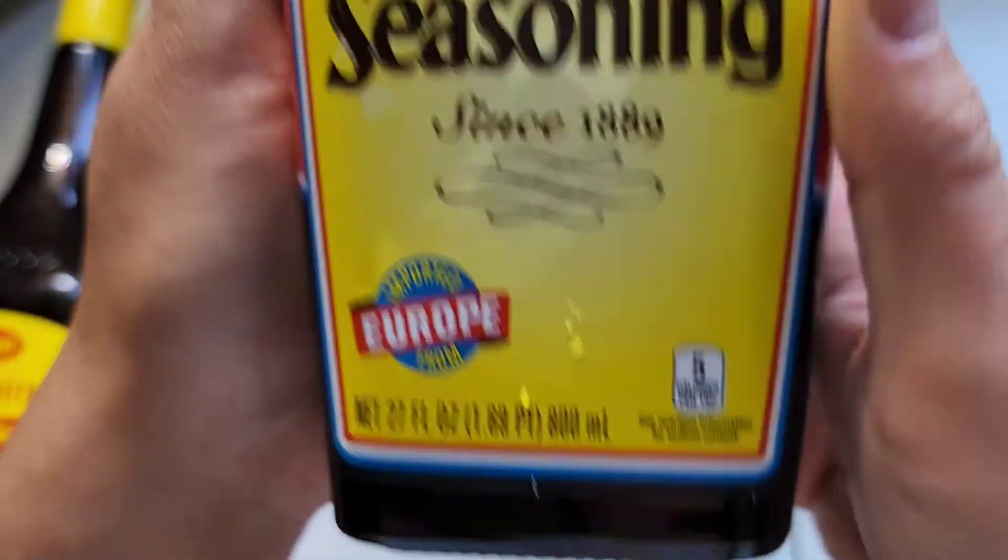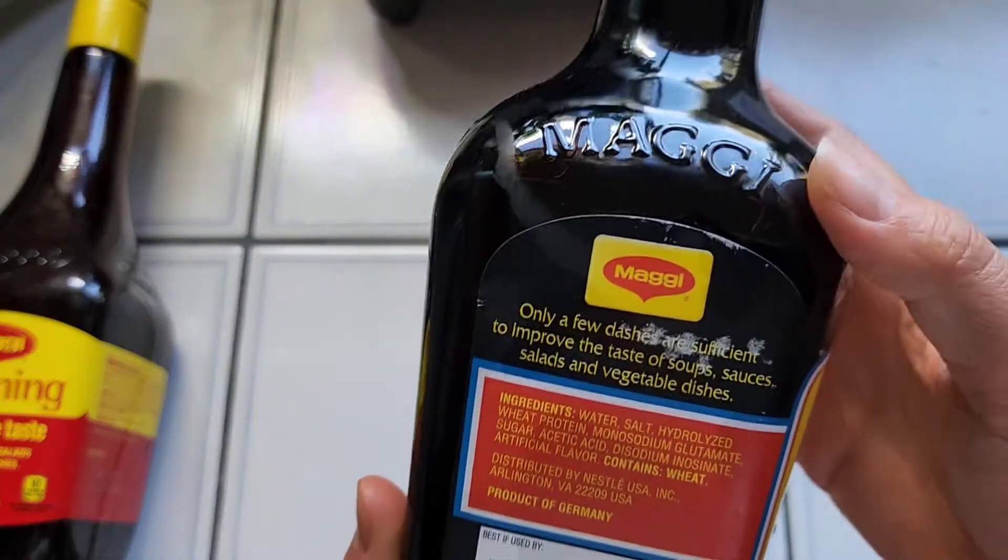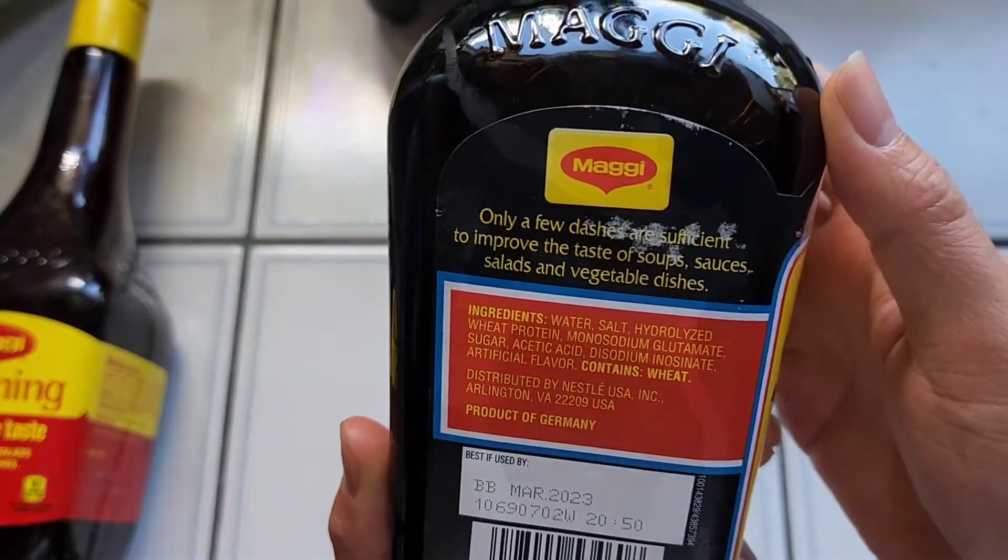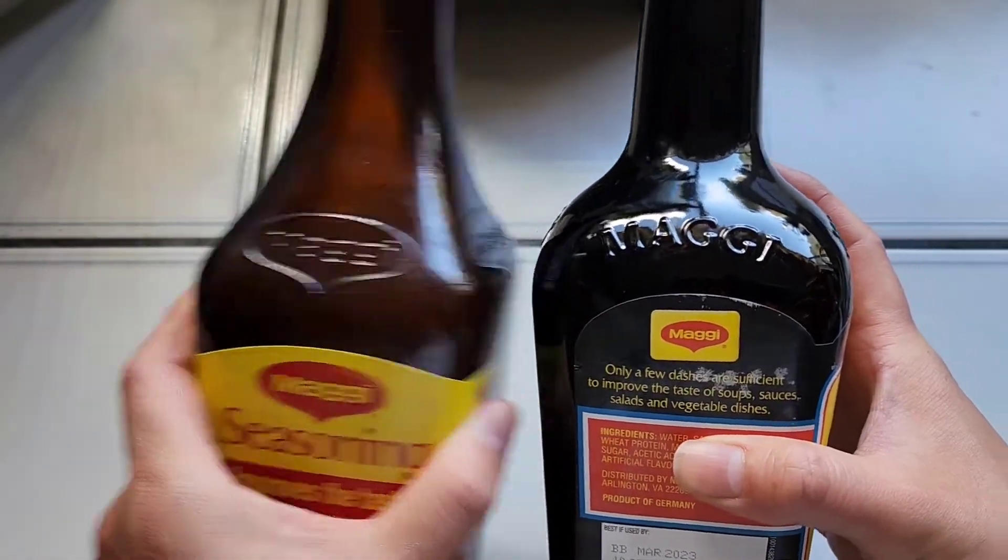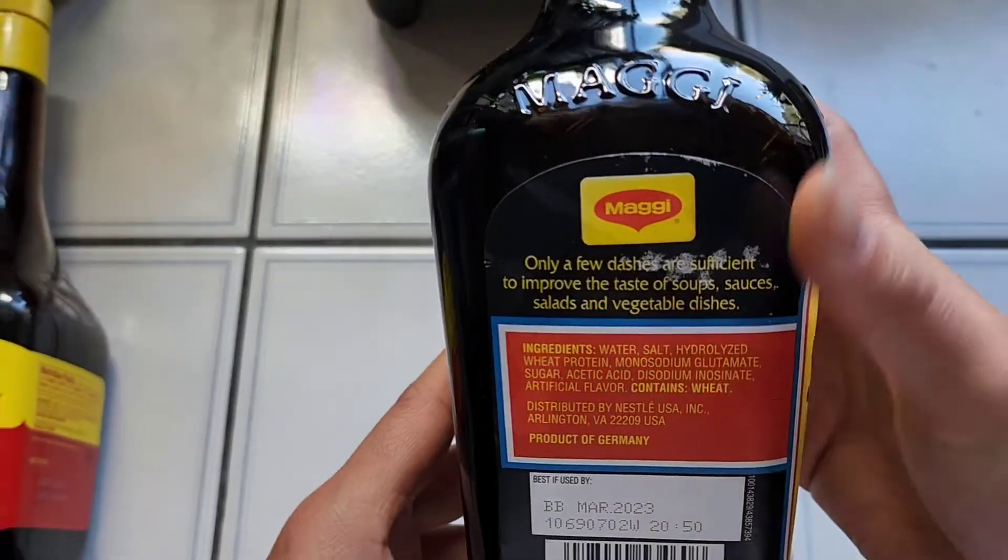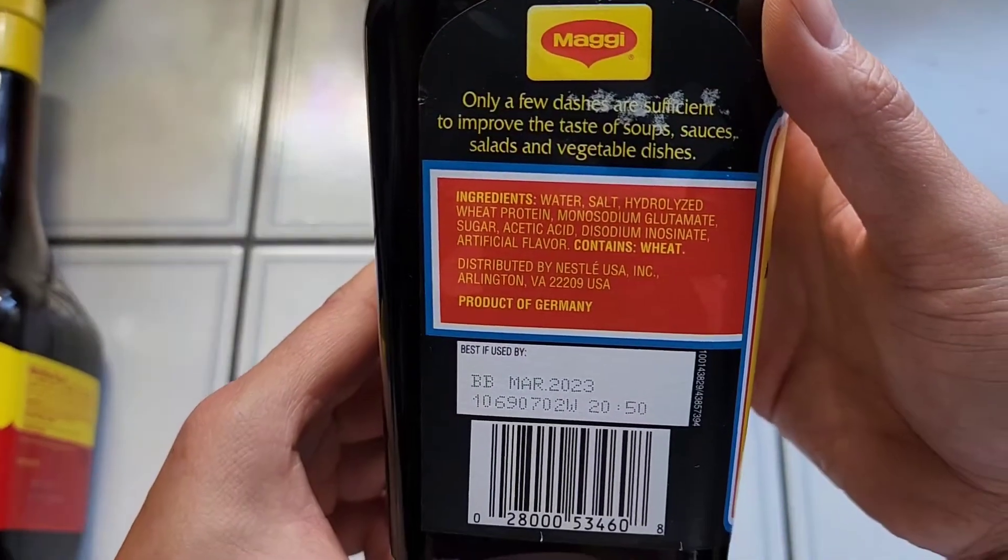Five calories per teaspoon. Here you go. They even print that on the bottle. They changed the logo from the last time. Or actually, the logo's the same, but they changed what they printed on the bottle. You can see, only a few dashes are sufficient to improve the taste of soups, sauces, salads, and vegetable dishes.